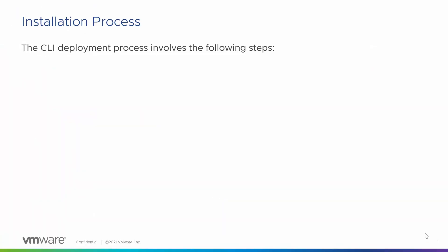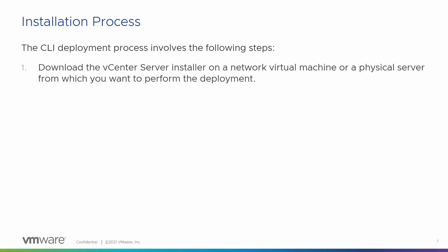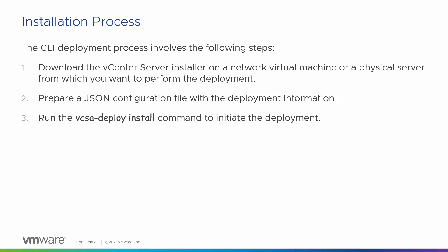The CLI deployment process involves the following steps. Download the vCenter server installer on a network virtual machine or physical server from which you want to perform the deployment. Prepare a JSON configuration file with the deployment information. Run the vcsa-deploy install command to initiate the deployment. Verify whether the installation is successful.